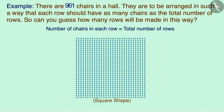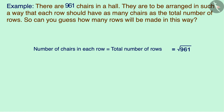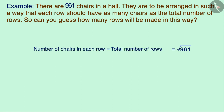This would be possible only if the total number of chairs we have been given is a perfect square number. If it is a perfect square, then its square root gives us the number of rows and the number of chairs in each row. Let us find the square root of 961 using the division method.